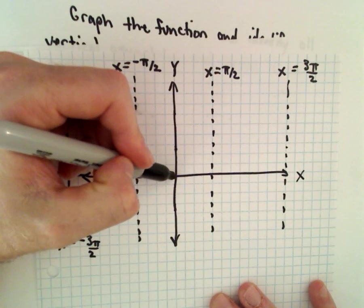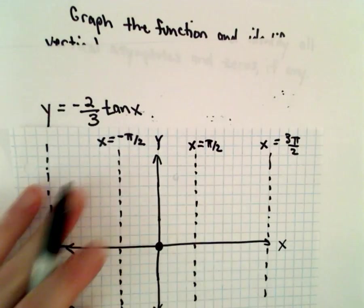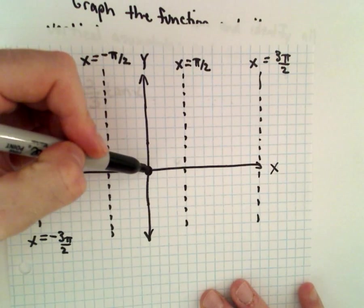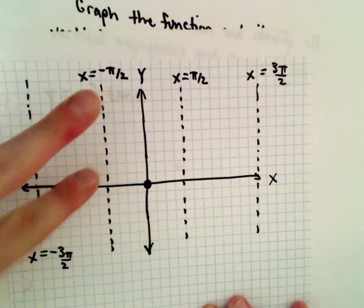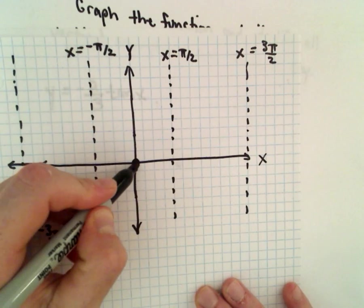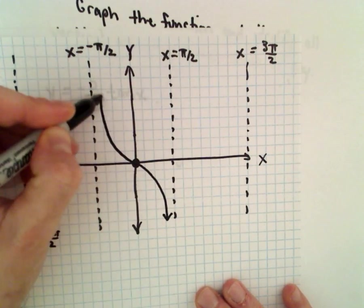So tangent normally goes through zero zero, and this graph is certainly doing the same. As you move to the right it increases and it decreases, but since we have negative 2 thirds, it's going to reflect that, so the graph is now going to go down and we'll go up.